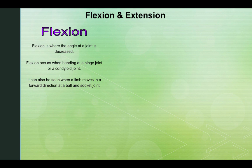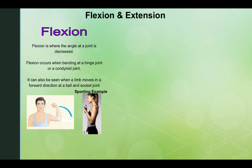Flexion is where the angle at the joint is decreased. Flexion occurs when bending at a hinge joint or a condyloid joint. It can also be seen when a limb moves in a forward direction at a ball and socket joint. A great example of this is the elbow — the forearm flexes as the bicep contracts and moves towards the face. A sporting example would be a bicep curl.